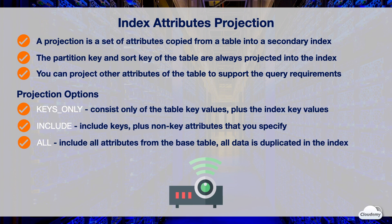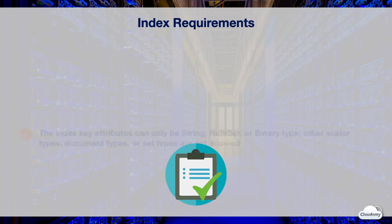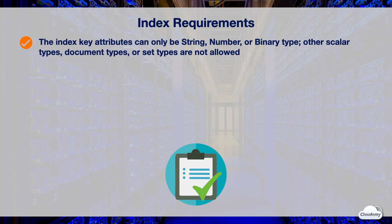The All option includes all attributes from the base table — all table data is duplicated in the index, resulting in the largest possible secondary index. Index key attributes can only be of string, number, or binary type from the base table. All other scalar types, document types, or set types are not allowed.